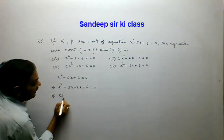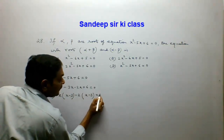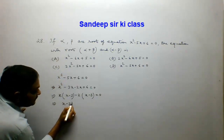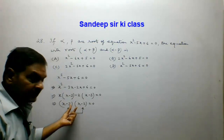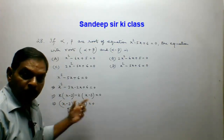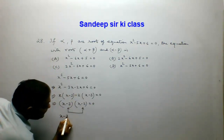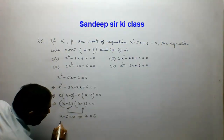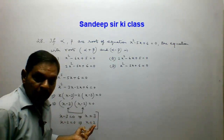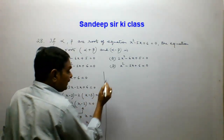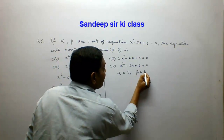Taking x common gives x(x minus 3), and factoring gives (x minus 3)(x minus 2) equals 0. So either x minus 3 equals 0 giving x equals 3, or x minus 2 equals 0 giving x equals 2. We have obtained two roots. So let alpha equal 3 and beta equal 2.